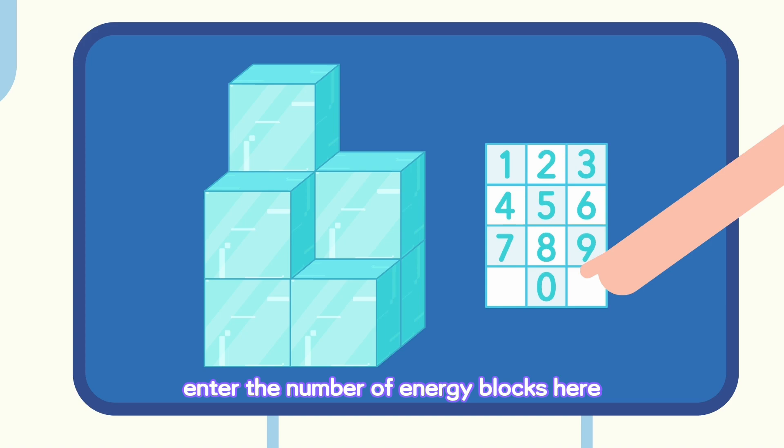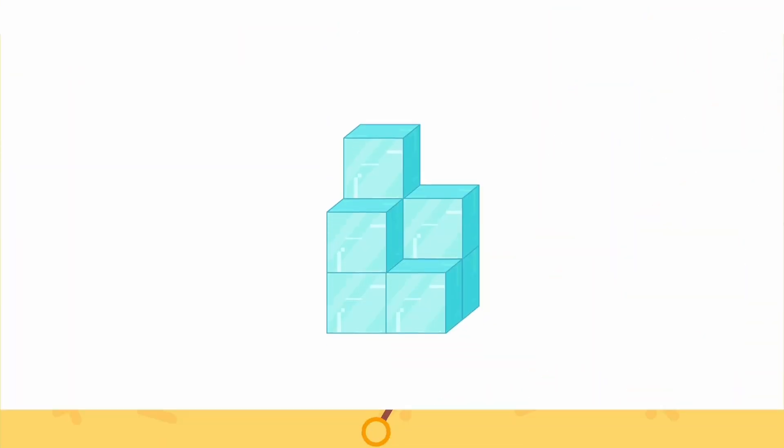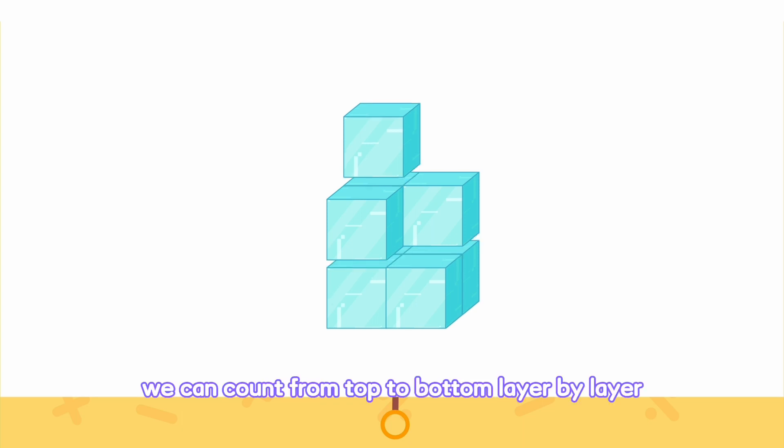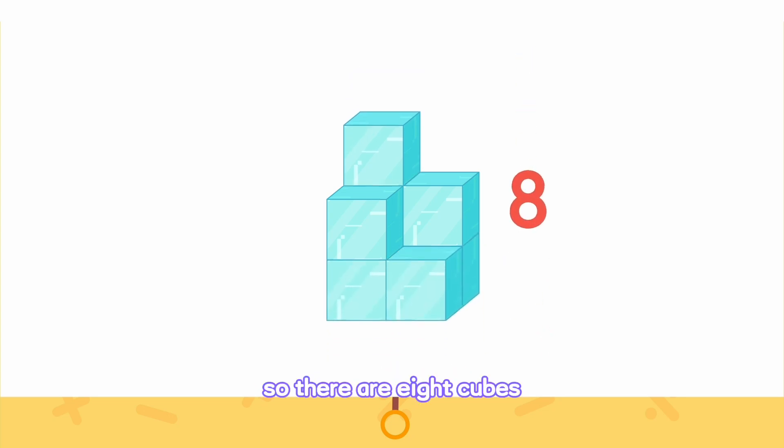Enter the number of energy blocks here! Leave it to me! Let's count the number of energy blocks! We can count from top to bottom, layer by layer. One on the first layer, three on the second layer, and four on the third layer. So there are eight cubes!